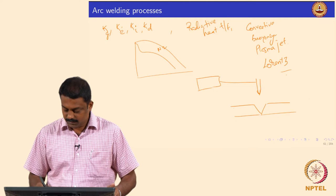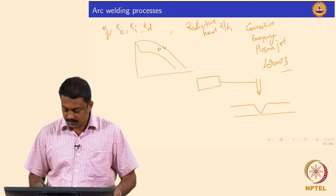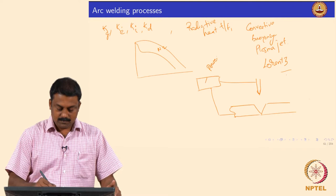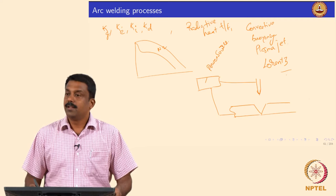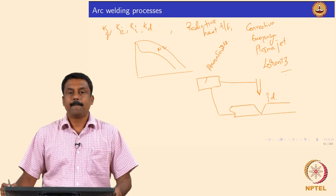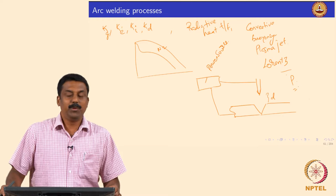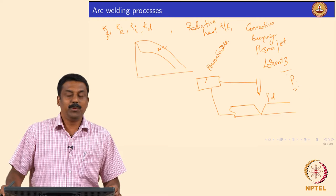For arc ignition, consider thermionic emission which emits electrons. In a typical setup you have a power source, a weld interface to be joined, and an electrode — which can be consumable or non-consuming. You connect the electrode and the work piece to the power source, and keep some distance D from the electrode tip to the material, sending shielding gas at pressure P.